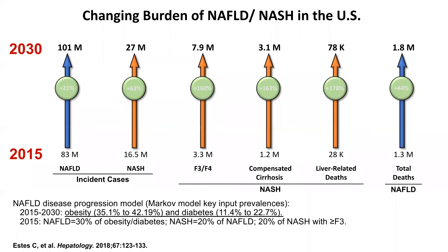We expect the burden of fatty liver disease to continue increasing over the next decade. By 2030, we estimate 100 million people will be affected with fatty liver disease in the United States, with more cases of NASH, more cirrhosis, and more liver-related deaths — creating a significant healthcare burden.